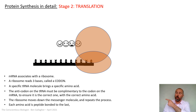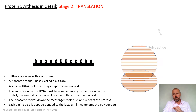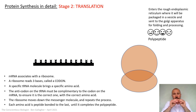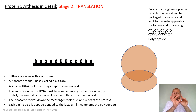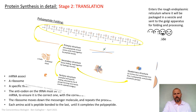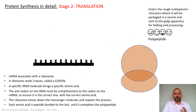Normal mRNA strands are much longer than the example shown — hundreds, if not thousands, of nucleotides long. When the ribosome reaches the end, it comes off and releases the polypeptide. The polypeptide enters the body of the rough endoplasmic reticulum, travels to the end, and gets packaged into a vesicle by pinching off. That vesicle then floats through the cytoplasm to the Golgi apparatus for folding and processing. Protein folding was covered in the previous lesson, so this video focuses only on transcription and translation.